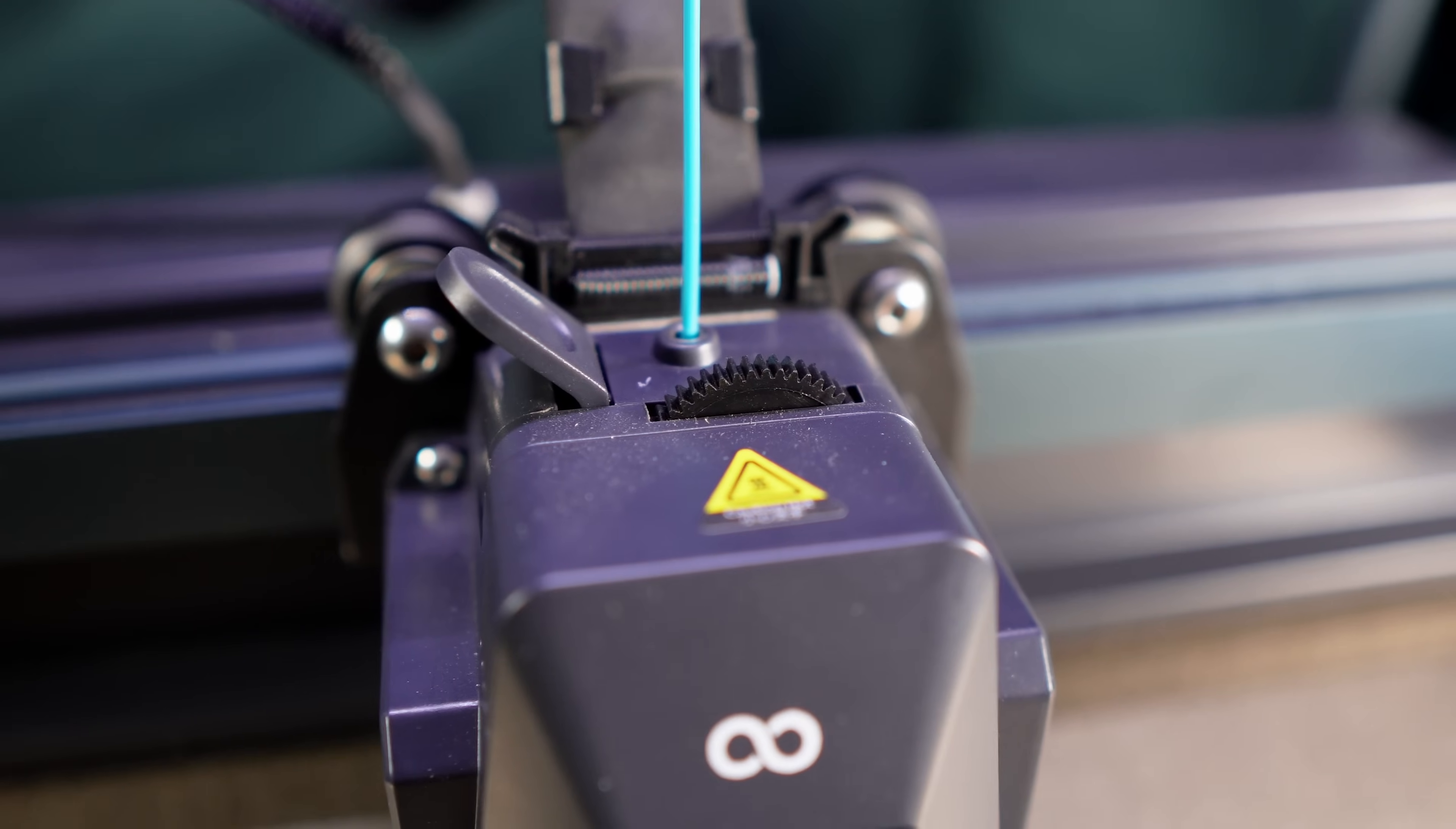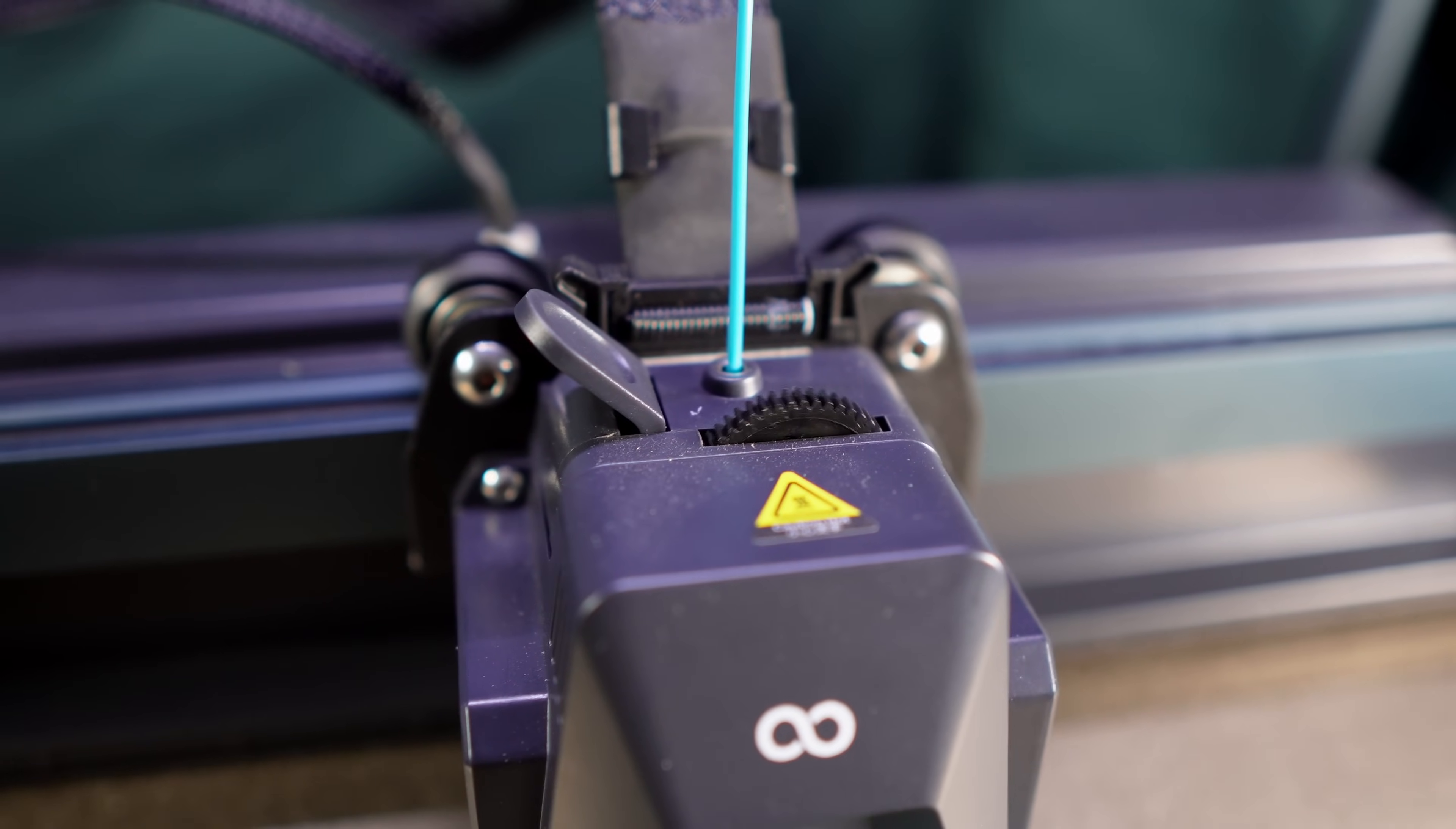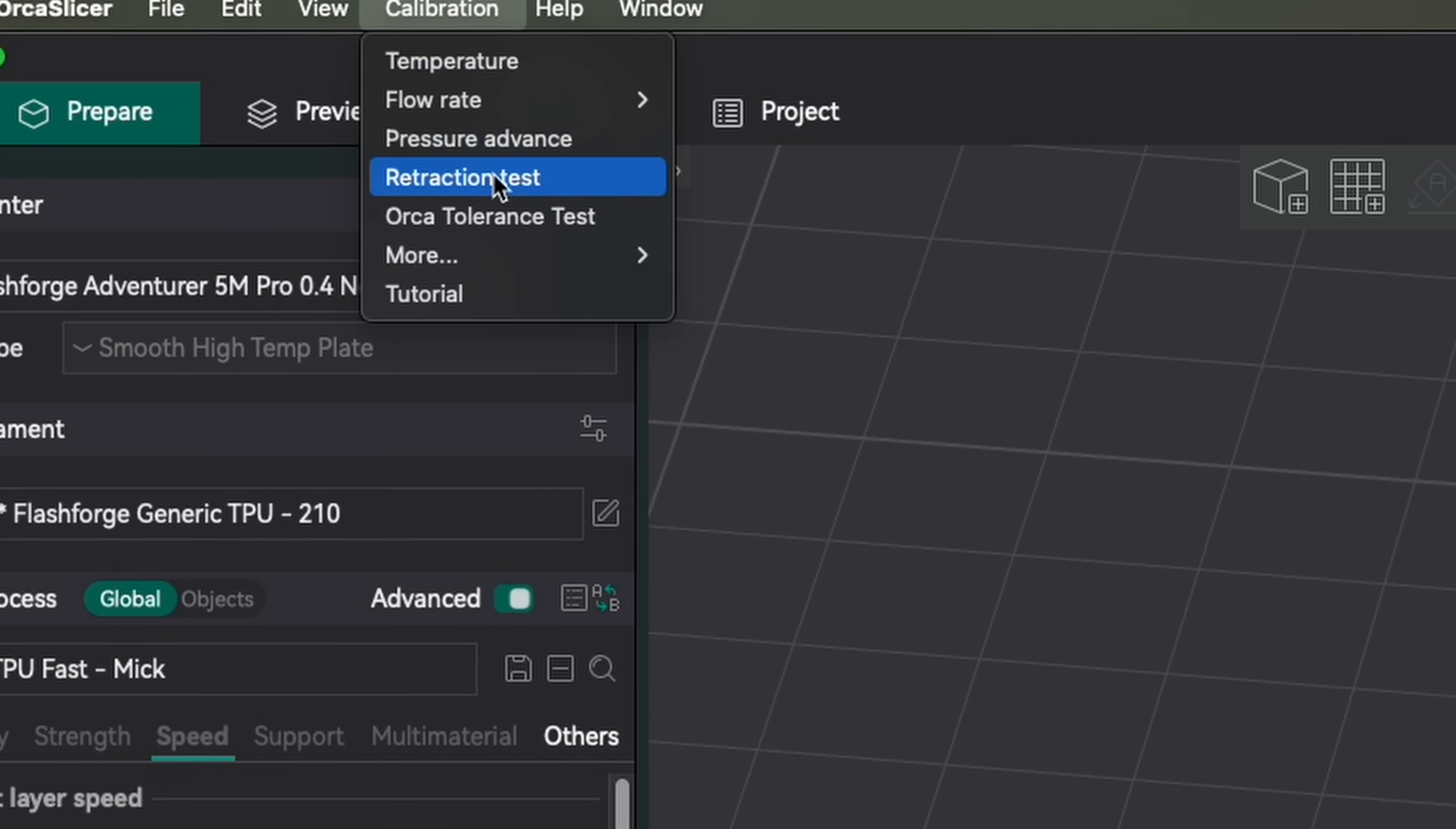Maybe this is a retraction issue. When a printer retracts, it pulls the filament back to relieve some of the pressure at the nozzle. This is typically done when the printhead is traveling to prevent stringing. This might be my answer. I'll print the retraction test in Orca Slicer.